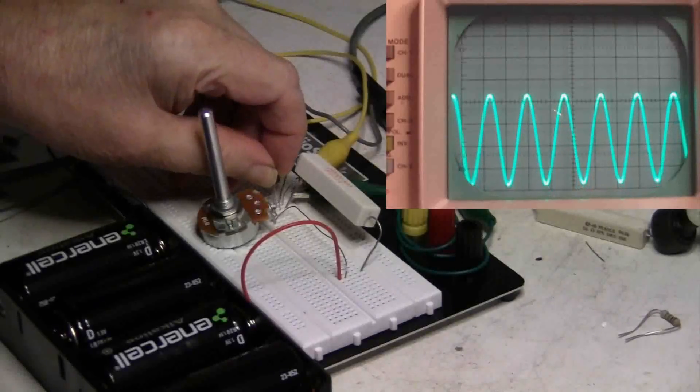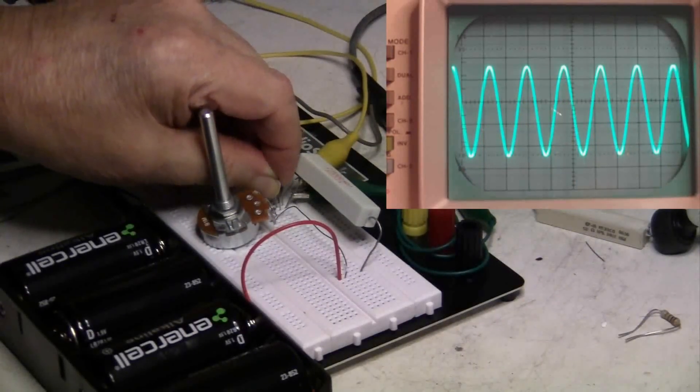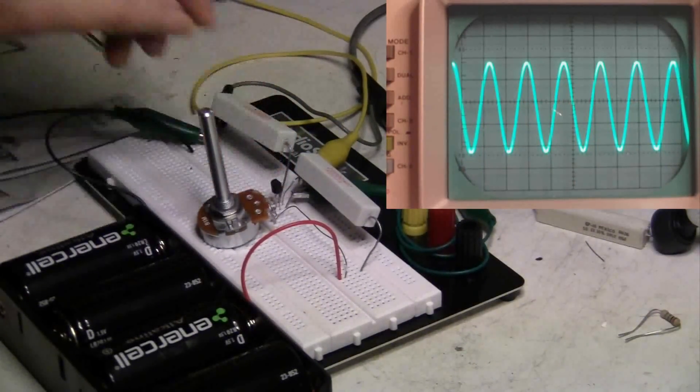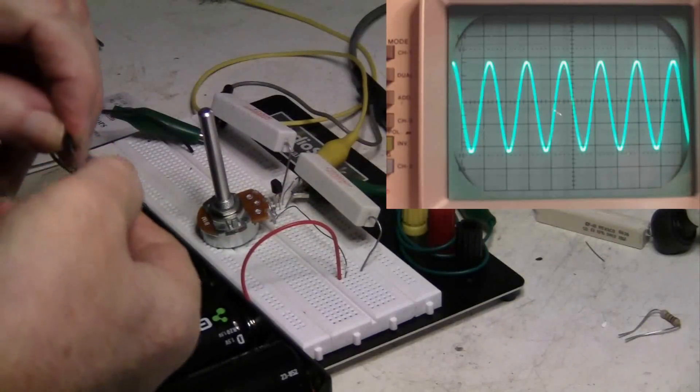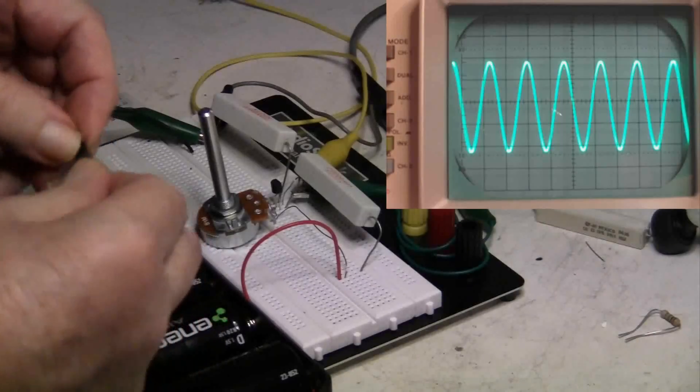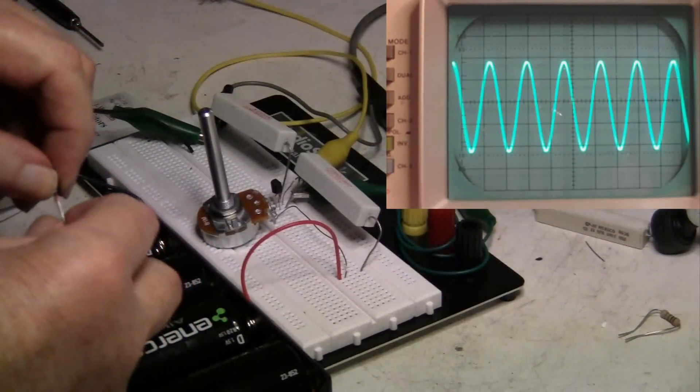Here I'm plugging in the NPN transistor with the beta of 325.44. That looks pretty good on the scope.